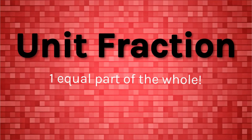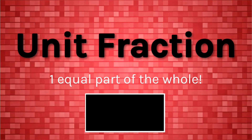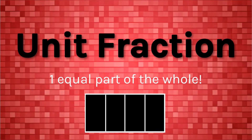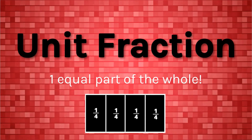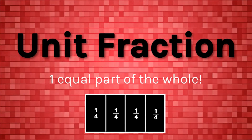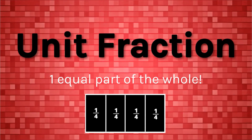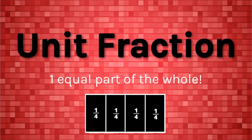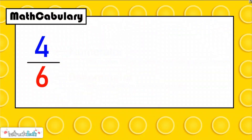A unit fraction is one equal part of the whole. If I have one whole and split it into four equal parts, I have made fourths. Each of those pieces now has a value of one-fourth. One-fourth is my unit fraction — it is the building block of my whole. To make the whole, I would need four one-fourths. That concept is going to be used later in our video, but let's review some math-cabulary.